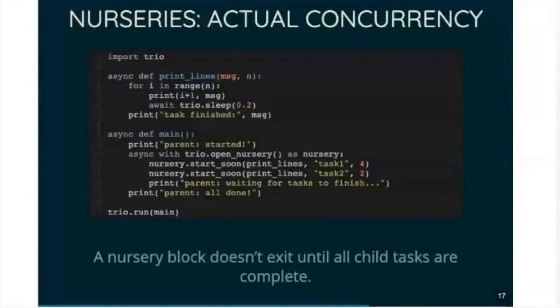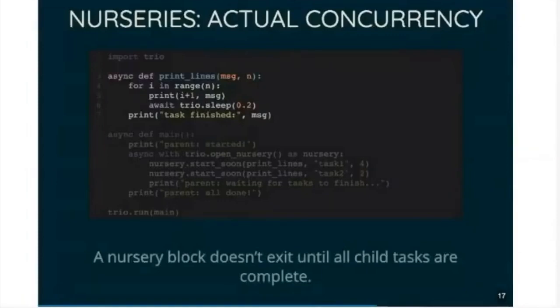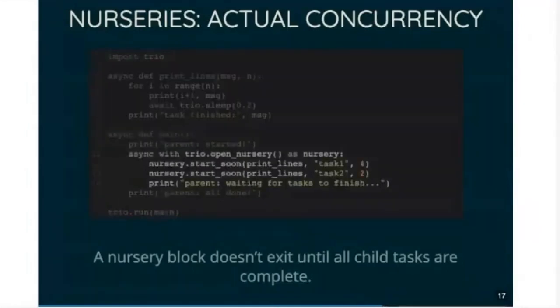So this code, as before, we have our task function that just prints a message n times. And in our main function here, instead of using createTask, we use nursery.startSoon. And we have this async block with the nursery. So async with openNursery as nursery.